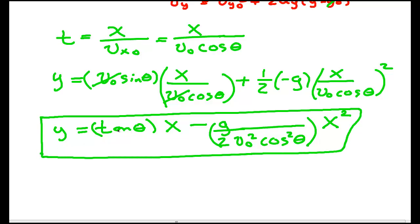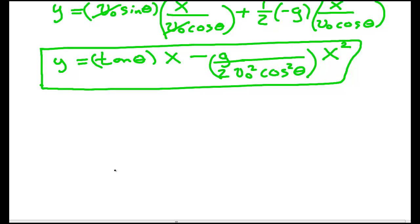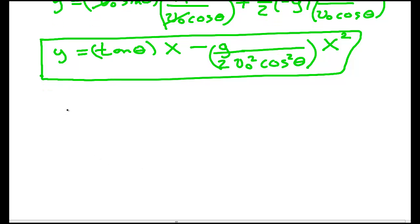Y is equal, sine over cosine is the tangent, so I have the tan of theta times x minus g over 2 V0 squared cosine squared theta times x squared. I have all these things. I have theta of 30 degrees, I can find the tangent. I have x, it's 50 meters. I have g, it's 9.8. I have V0 is 75, and so forth.